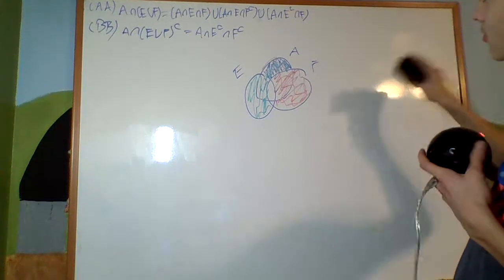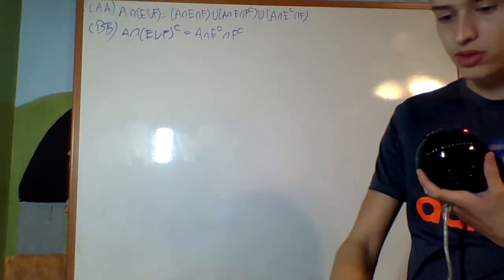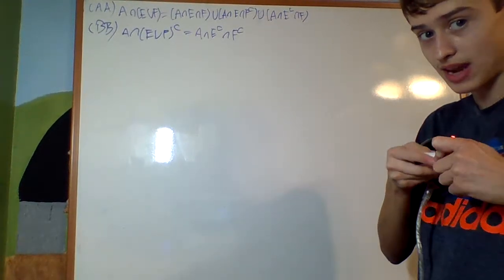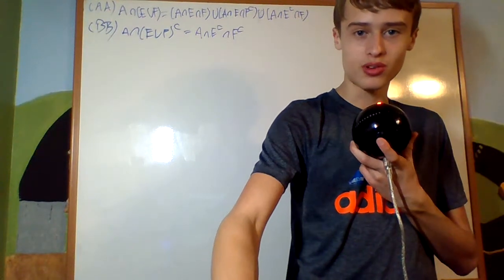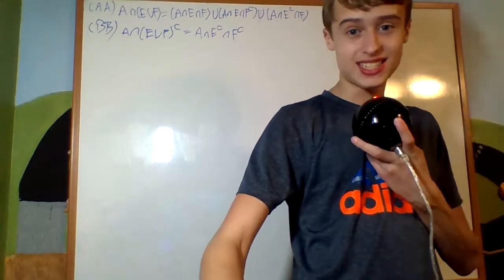So those are what those little facts say in terms of Venn diagrams. And in the next video, we will see how we can use them to prove that this is closed under countable unions.